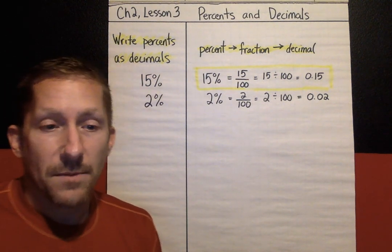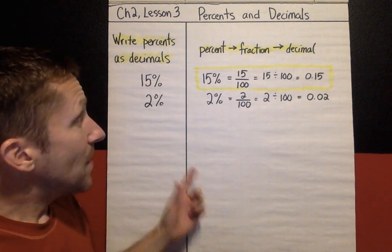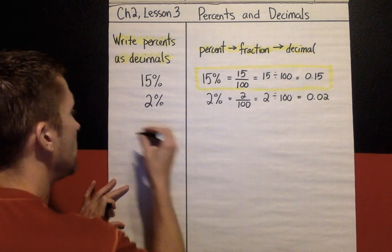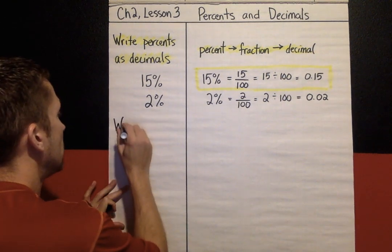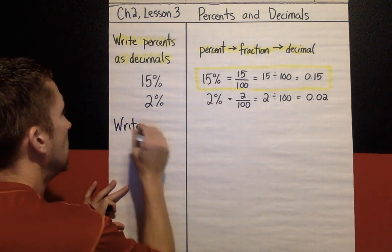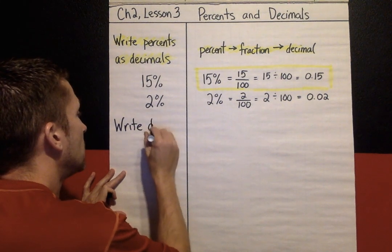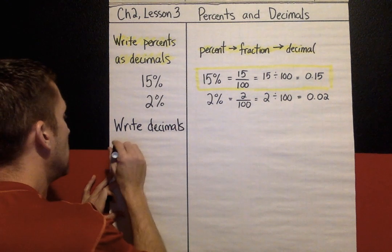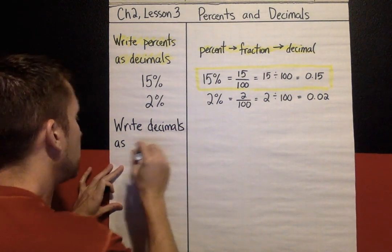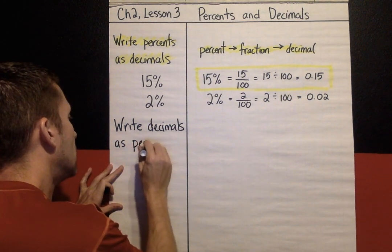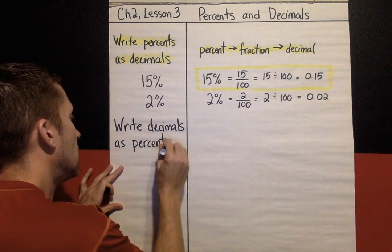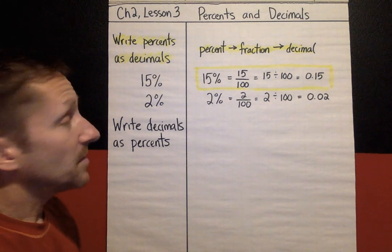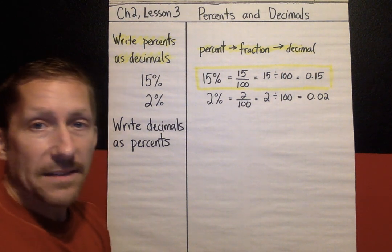The next kind of problem is: if you have a decimal, write that as a percent. So the next thing we're going to do is write decimals as percents, and this again builds on the first two lessons of Chapter 2.